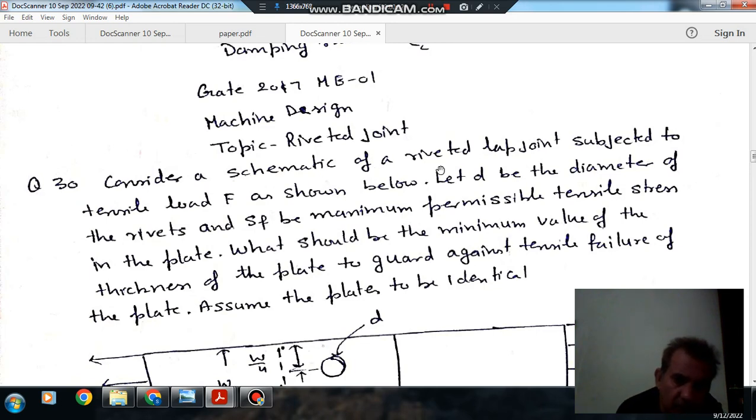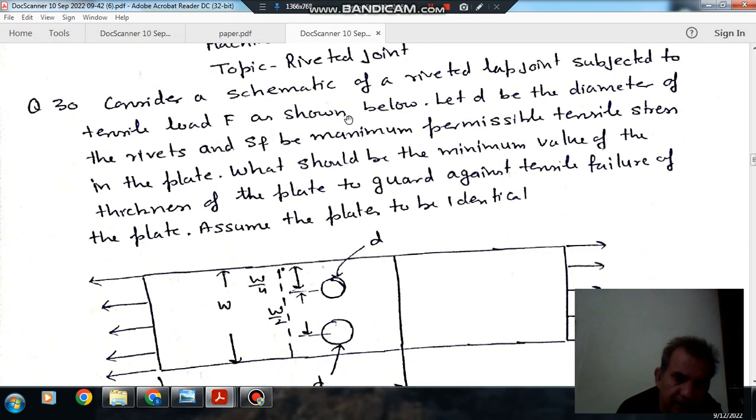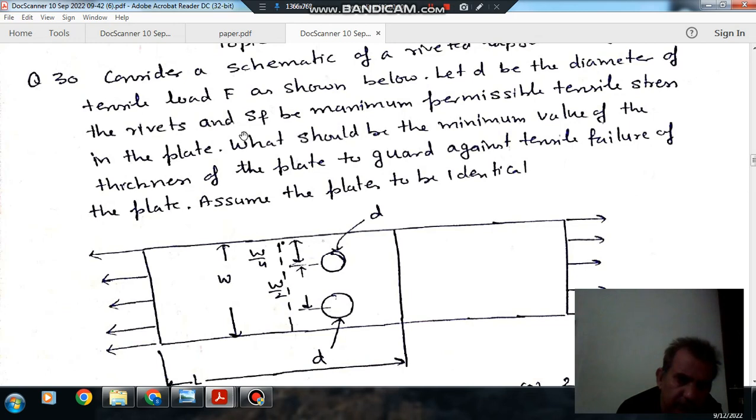Consider a schematic of riveted lap joint subjected to tensile load F as shown below. Let D be the diameter of the rivet and SF be the maximum permissible tensile stress in the plate.